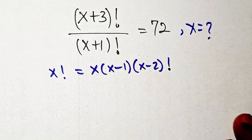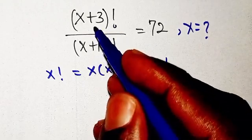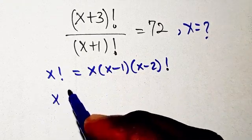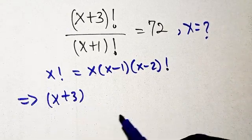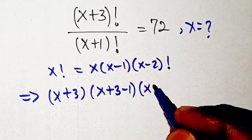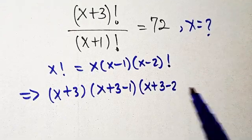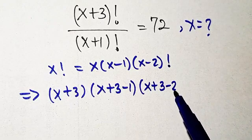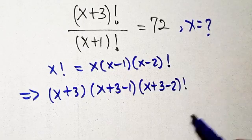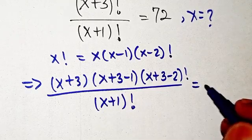We are going to apply that here because we are looking for the value of x. I'm going to rewrite x plus three factorial in this pattern: x plus three, then x plus three minus one, then x plus three minus two. I'll stop there because three minus two gives one, which is what I have at the denominator. So divide by x plus one factorial, equals 72.